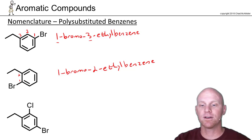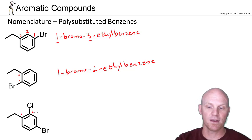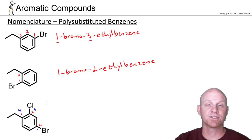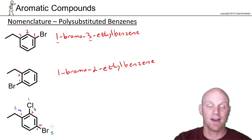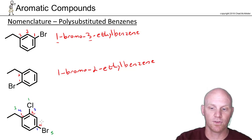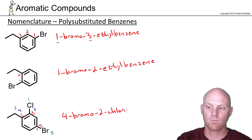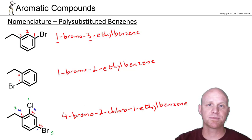With a trisubstituted benzene, you have to be more careful — it doesn't go straight to the alphabet; you need a numerical comparison first. Making ethyl number one puts chlorine at two and bromine at four, giving locators 1, 2, 4 — the best possible set numerically. Making bromine number one would give 1, 3, 4, and chlorine number one gives 1, 2, 5 — both worse. So naming alphabetically: 4-bromo-2-chloro-1-ethylbenzene. With multiple substituents, get your numbers assigned correctly, then name them alphabetically just as you would with an alkane.